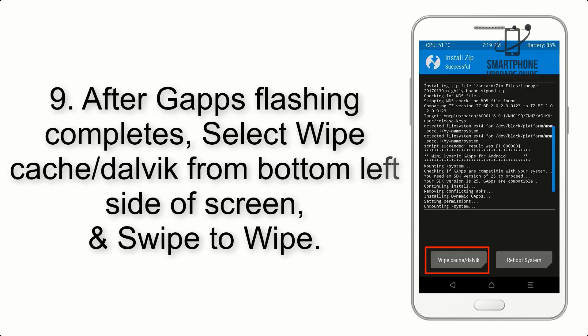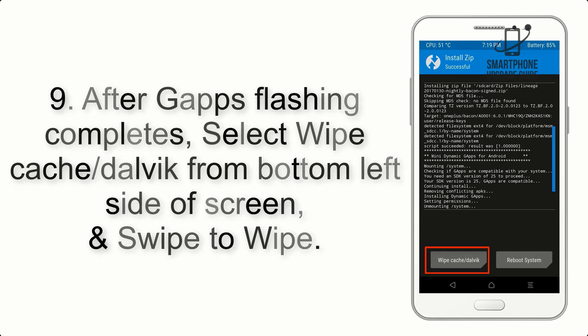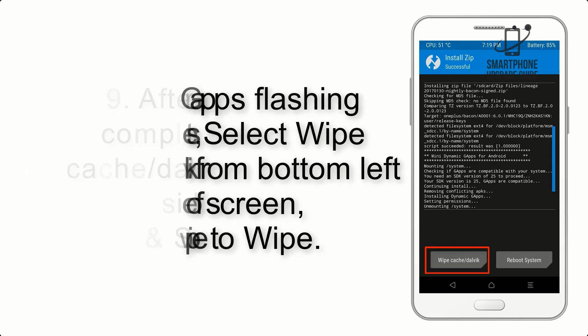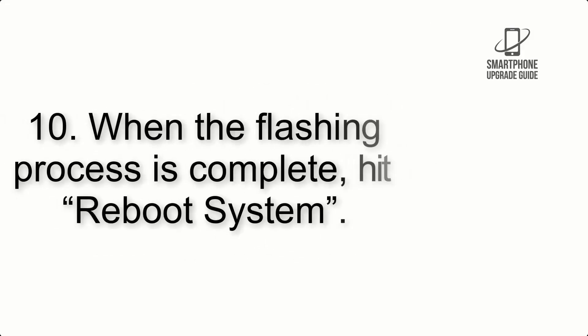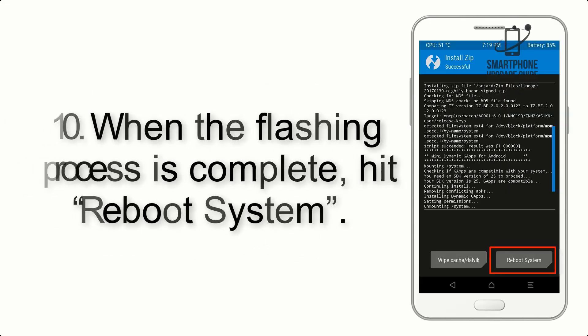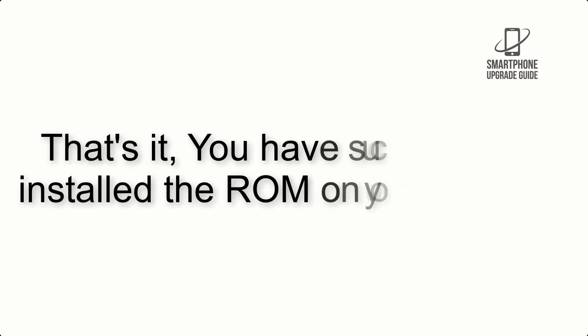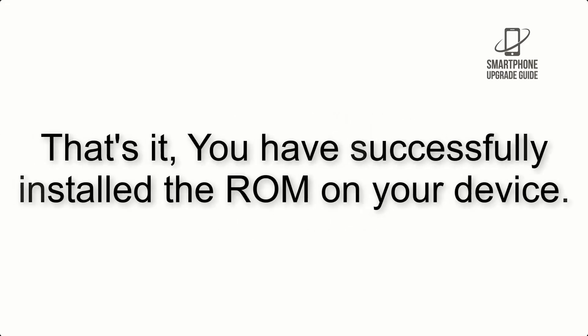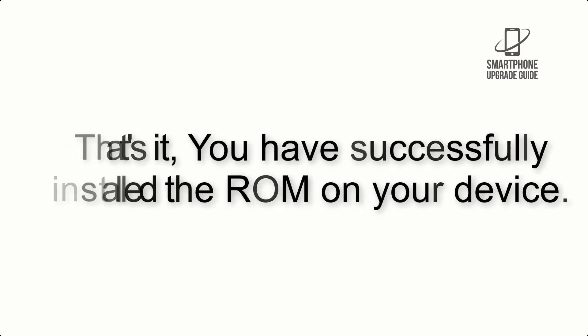Step 8: Flash the GApps zip package in the same manner. Step 9: After GApps flashing completes, select Wipe Cache and Dalvik from the bottom left side of the screen and swipe to wipe. Step 10: When the flashing process is complete, hit Reboot System. That's it — you have successfully installed the ROM on your device.